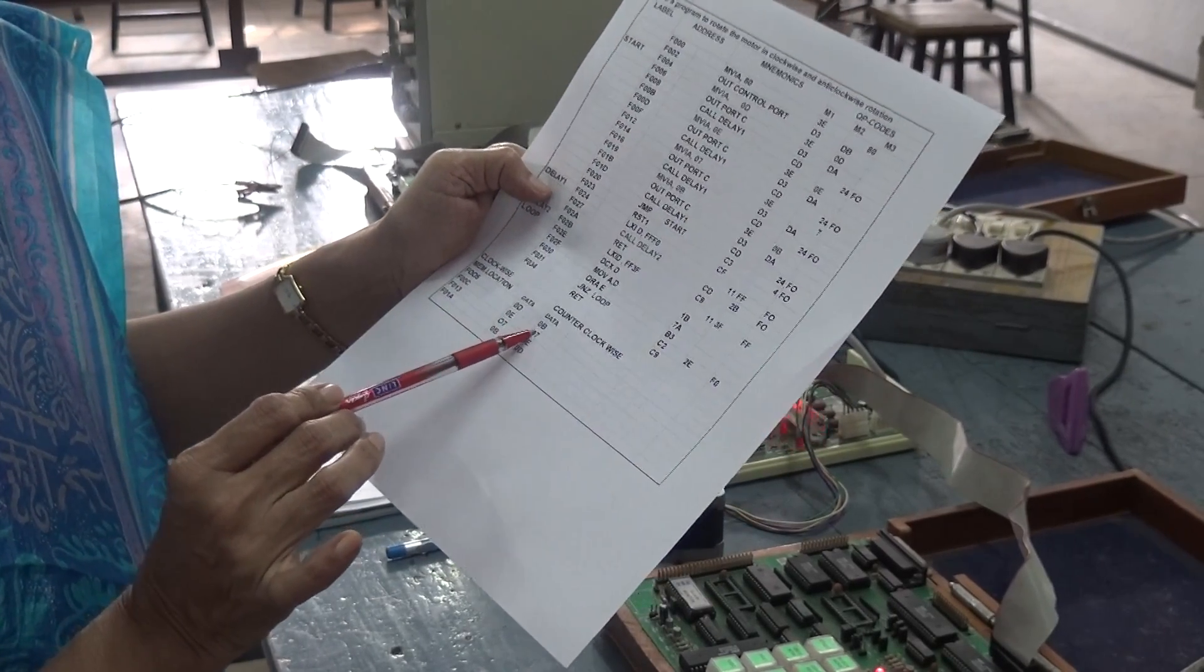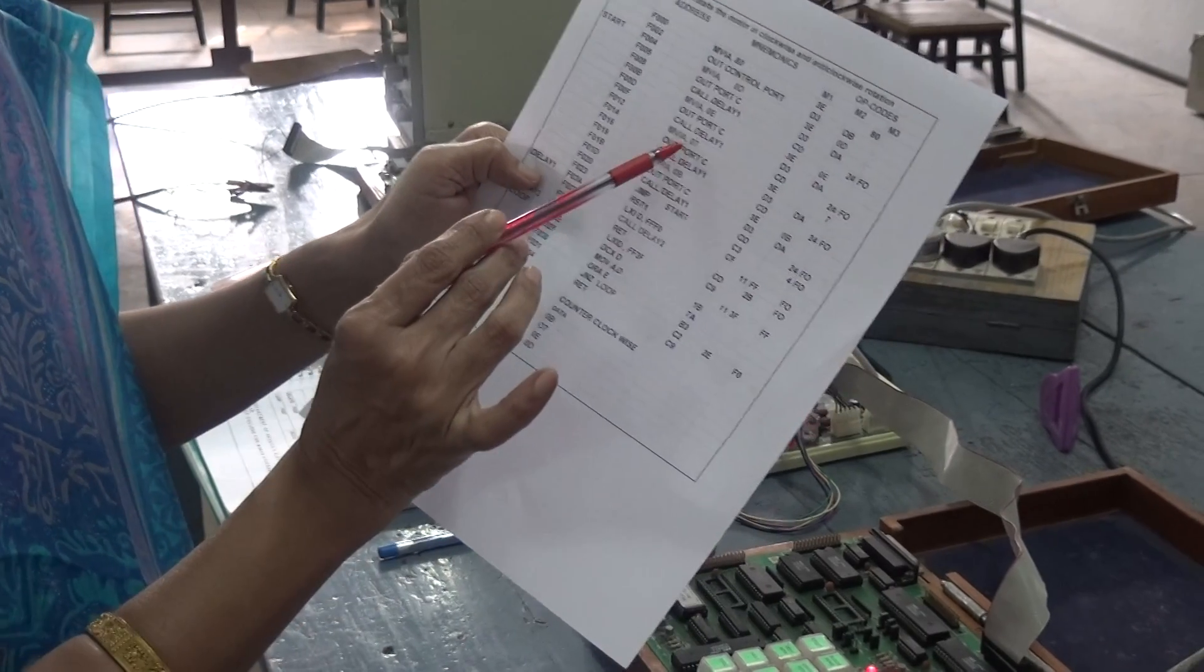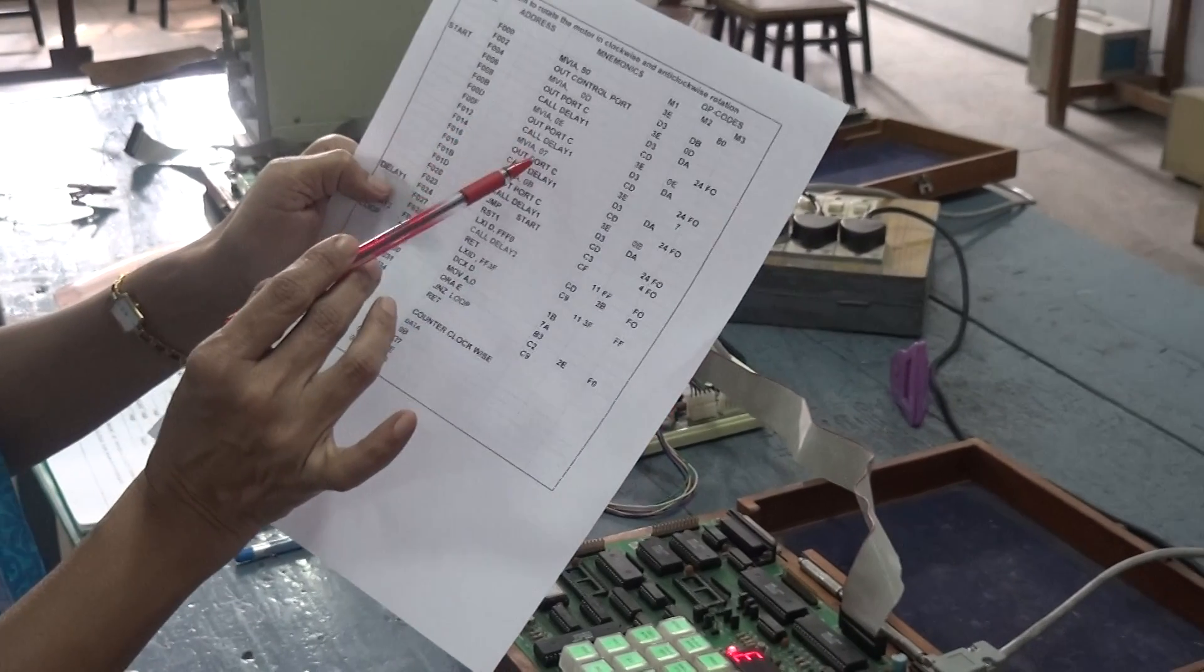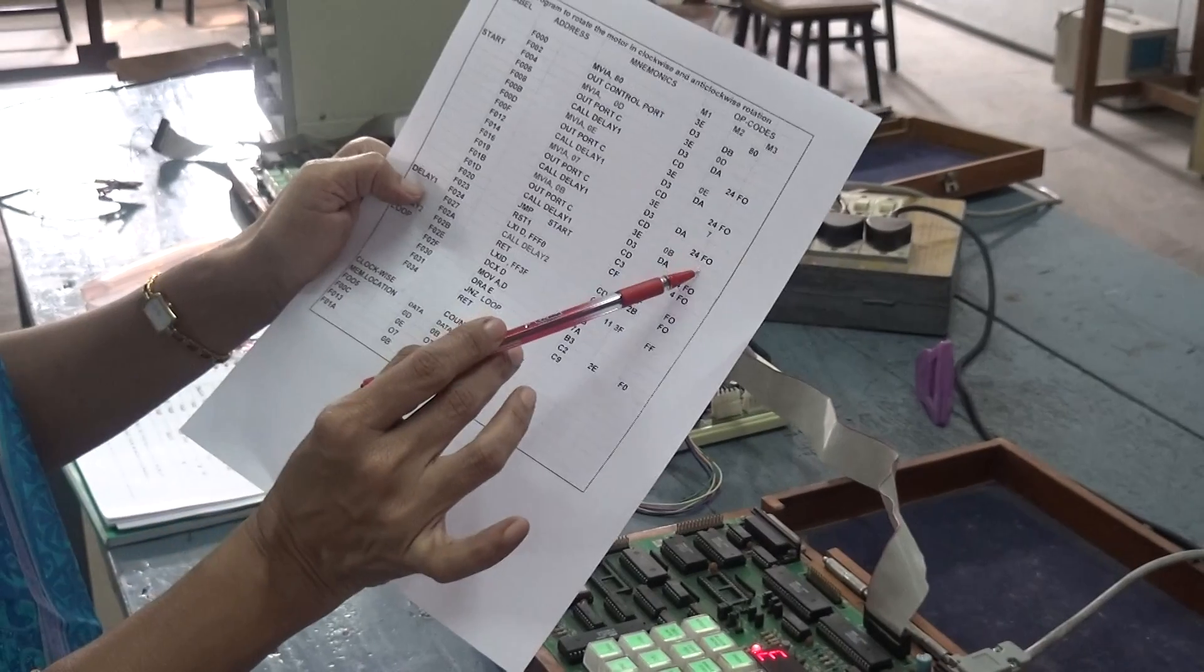What is the second data? Whatever is the second data that you are sending here. It can be either this order or this order. Suppose I send this data. Then, you send it to this port C. Once again, call a delay.